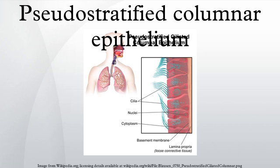Ciliated pseudostratified columnar epithelia are found in the linings of the trachea as well as the upper respiratory tract. Non-ciliated pseudostratified columnar epithelia are located in the membranous part of the male vas deferens. Pseudostratified columnar epithelia with stereocilia are located in the epididymis.